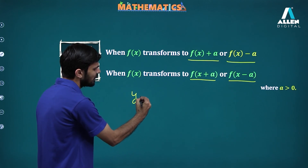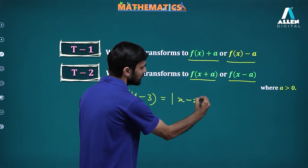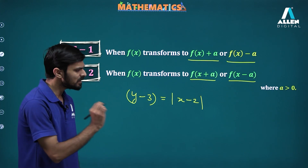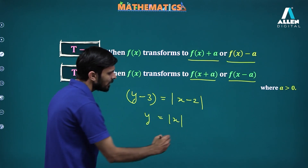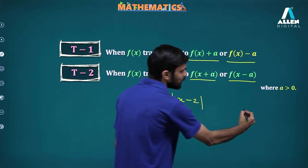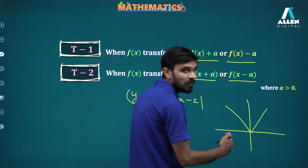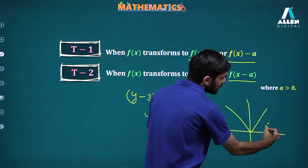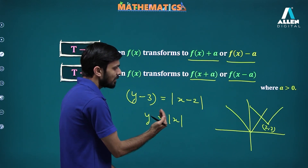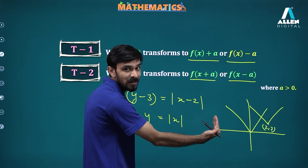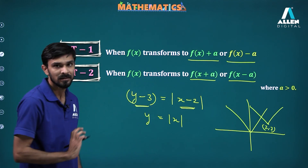Suppose you need to draw the graph of y minus 3 equal to mod of x minus 2. Think about it — this graph would have looked exactly like y equal to mod x if the origin was at (2, 3). So what happened here is you had the graph of y equal to mod x which has been shifted to (2, 3). The graph has shifted towards the right by 2 units and upwards by 3 units.